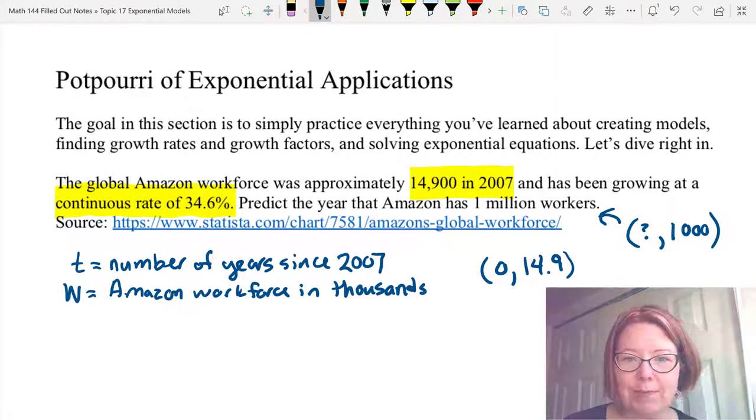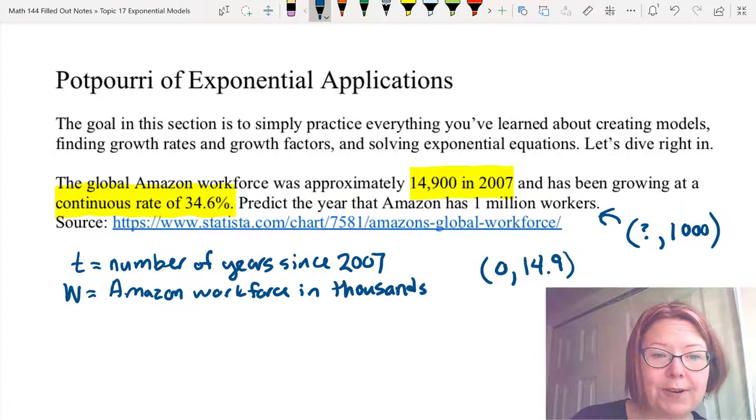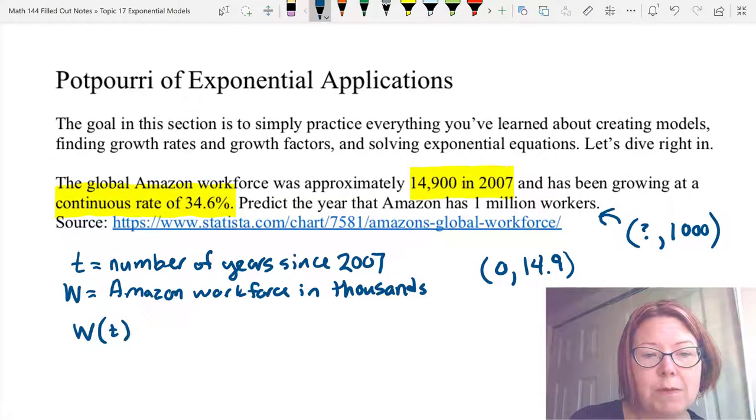Alright, we've got our variables declared. Let's start with a model. So W(t) would be the initial value 14.9 times e^(kt).